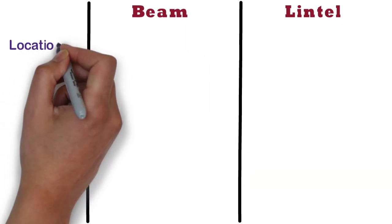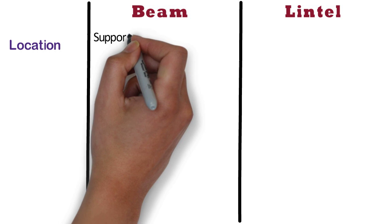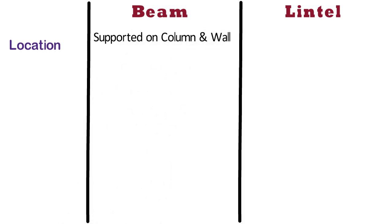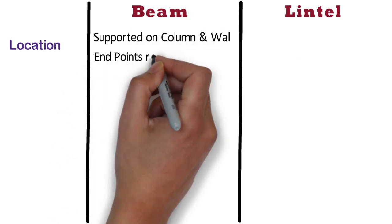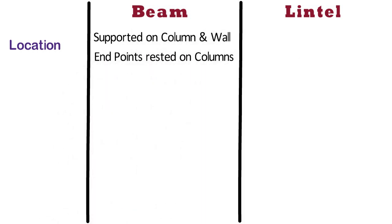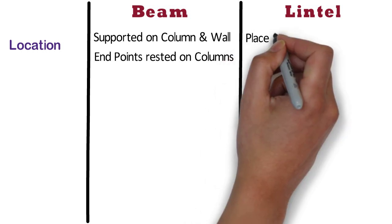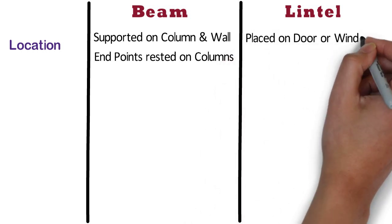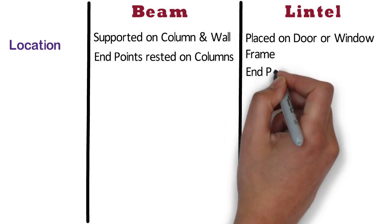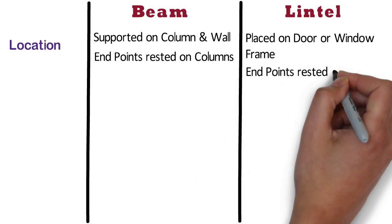Location. The beam is supported on the column and wall, and its end points rest on columns. Whereas, the lintel is placed on a door or window frame, or sometimes on the wall, and its end points rest on the walls.